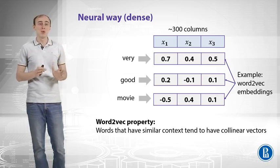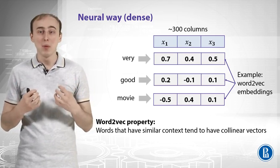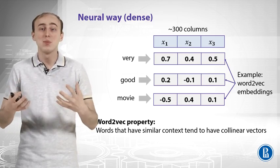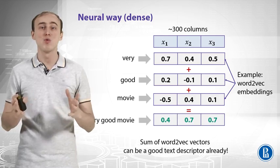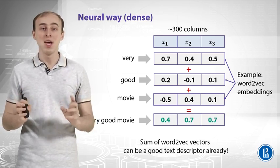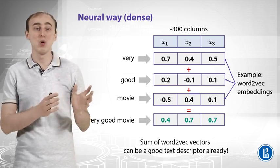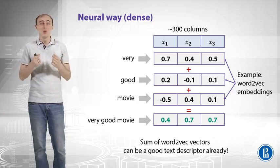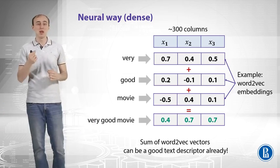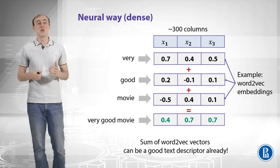Now we can replace each word with a dense vector of 300 real values. To get a feature descriptor for the whole text, we can use the same approach as bag of words — just take the sum of those vectors. This gives a representation based on word2vec embeddings for the whole text, and that sum actually works well in practice as a great baseline descriptor for a classifier.